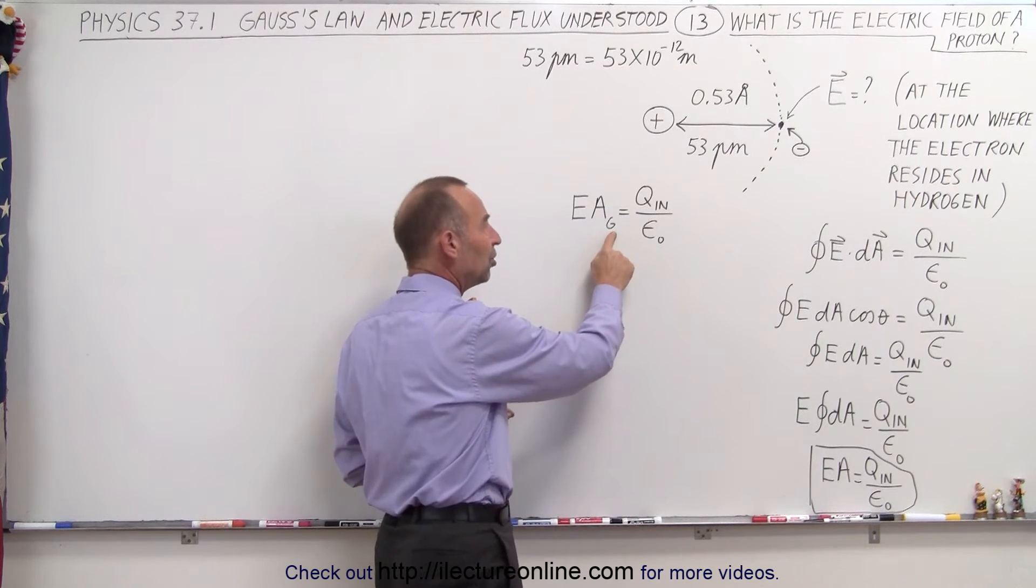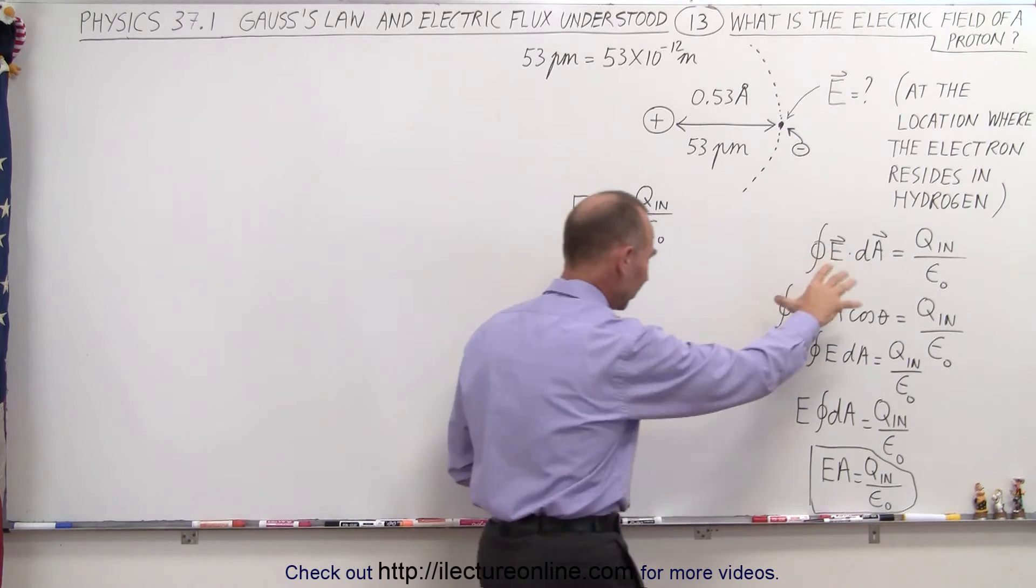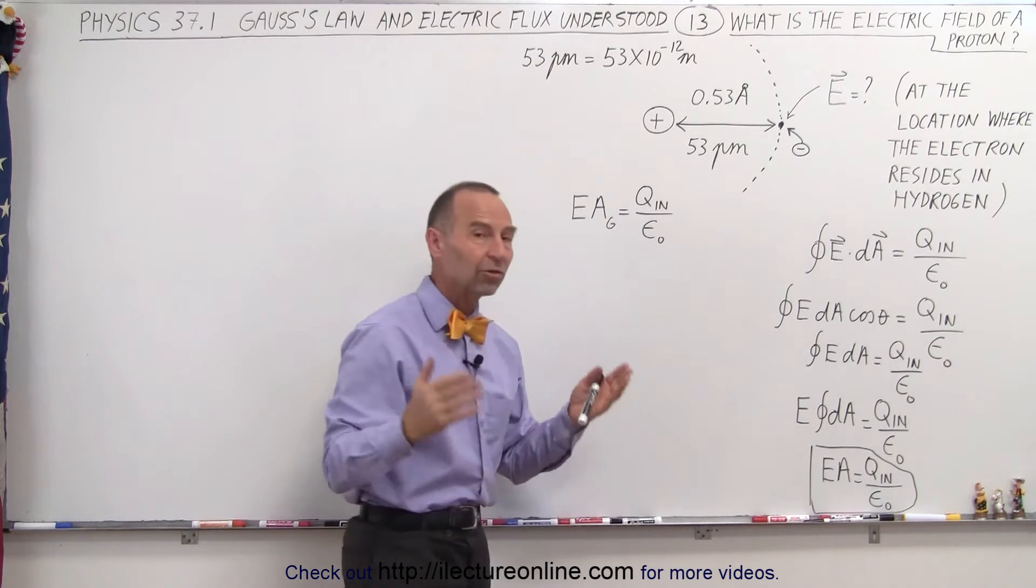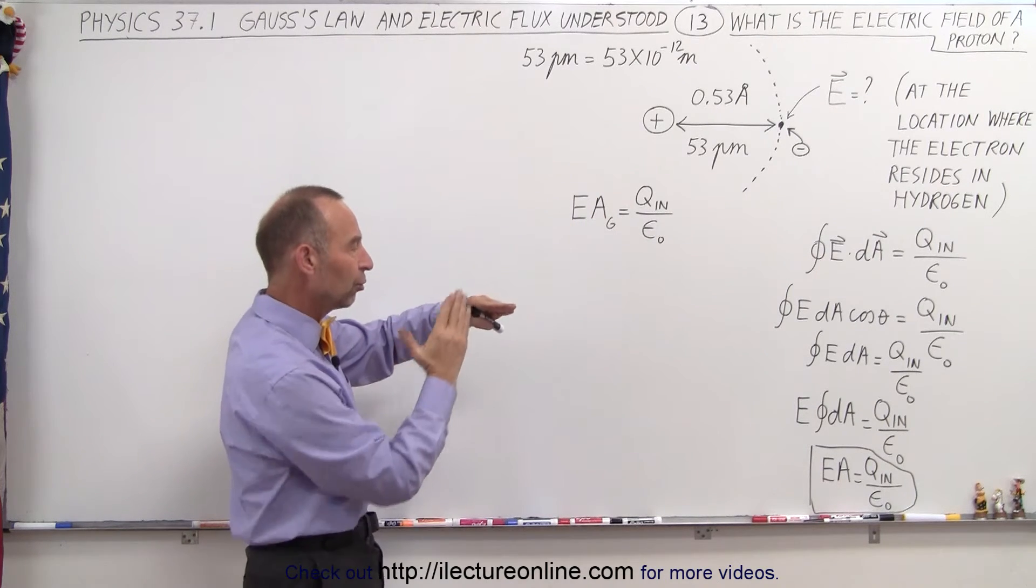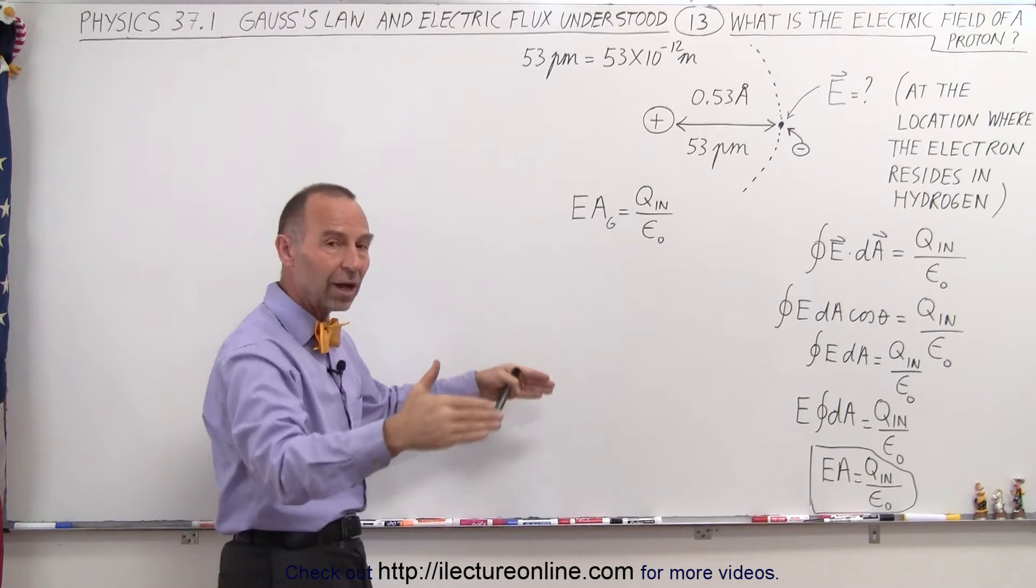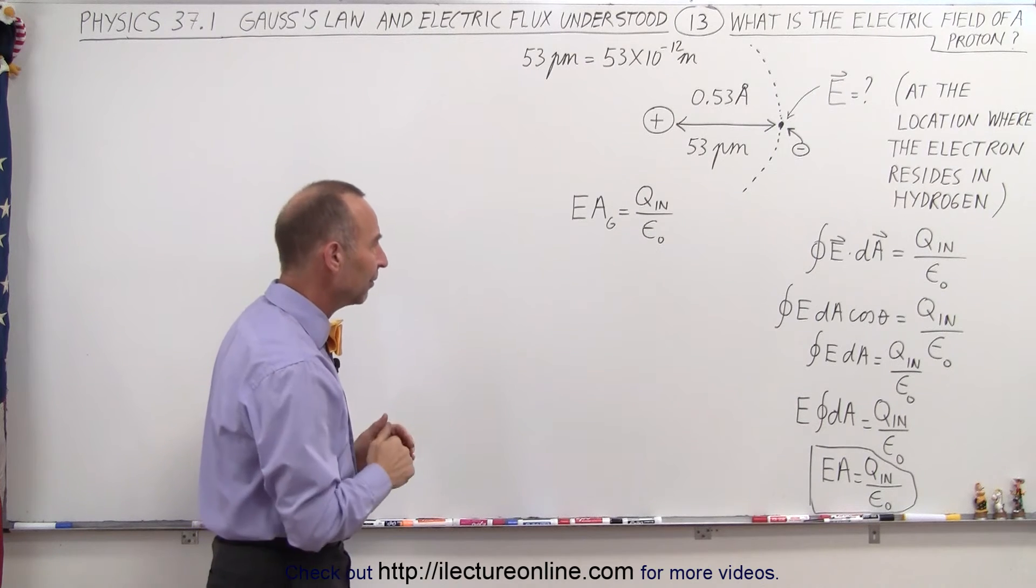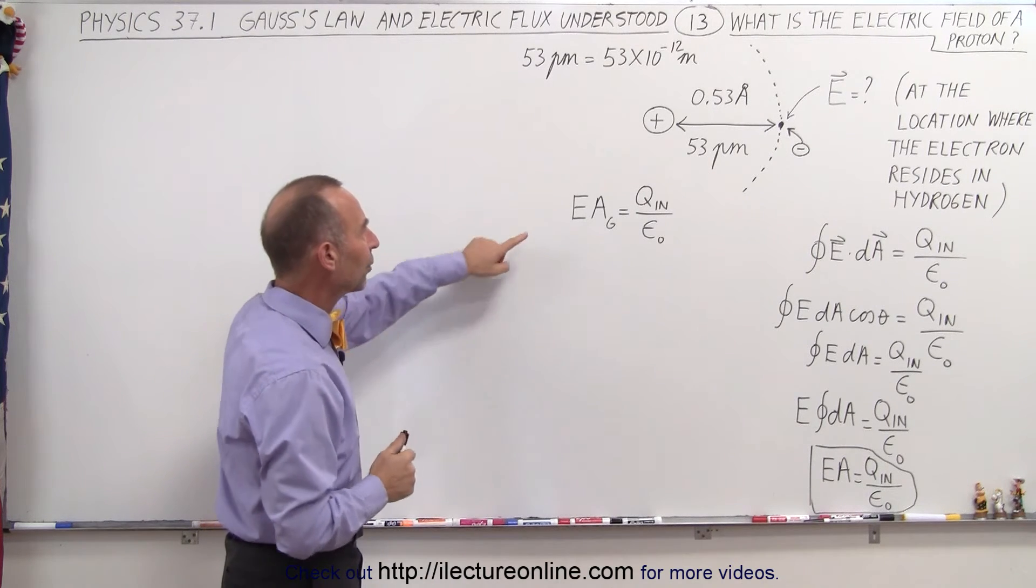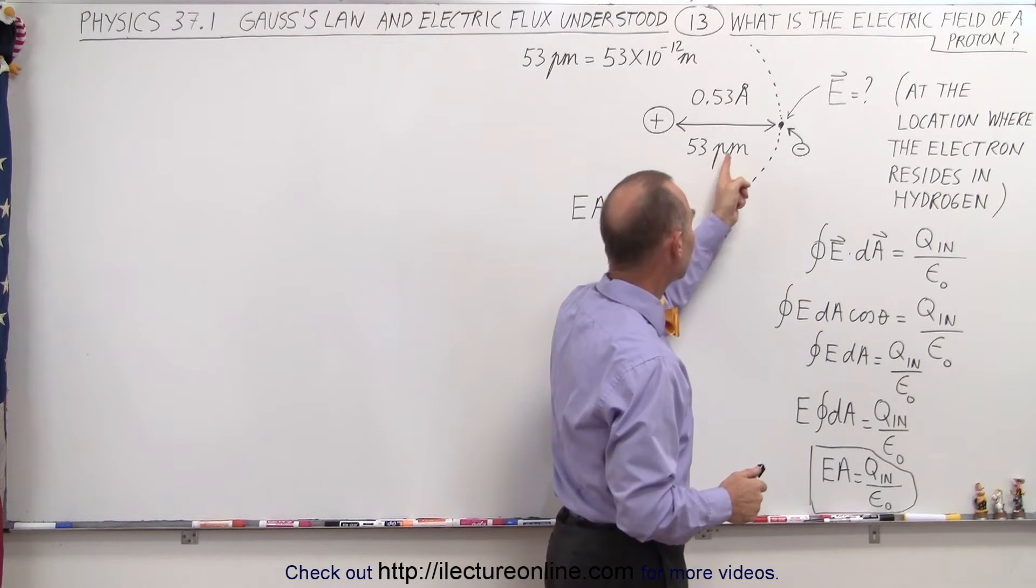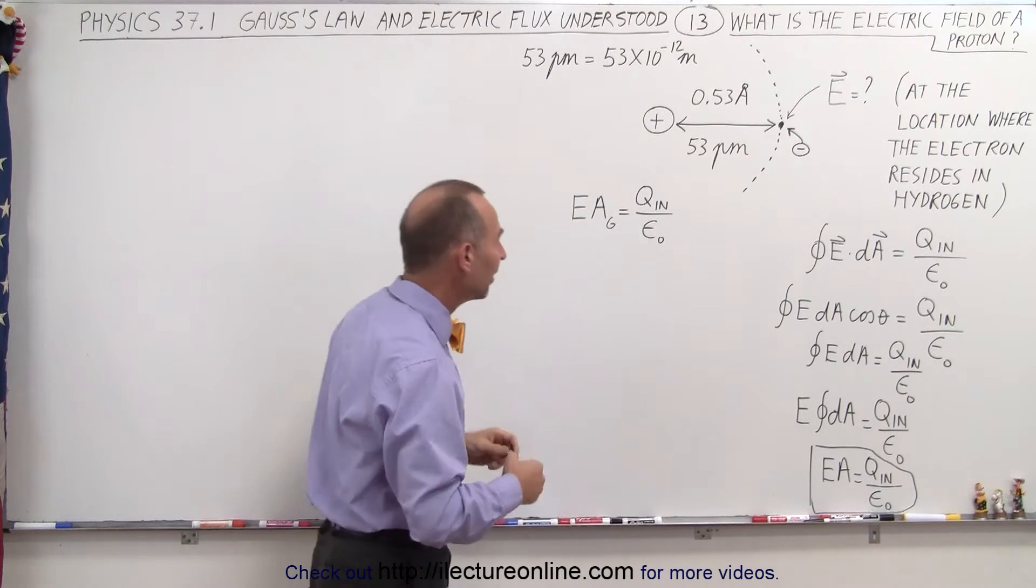Now the little sub g here simply indicates that's the area of the Gaussian surface. This complicated looking equation boils down to something quite simple, as long as we make sure that the electric field emanates through the Gaussian surface perpendicular to the surface, and that the electric field is constant anywhere along the surface. Let's now calculate the electric field at a distance of 53 picometers away from the proton, because that's where the electron resides in the hydrogen atom.